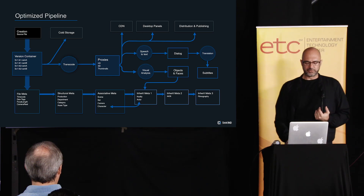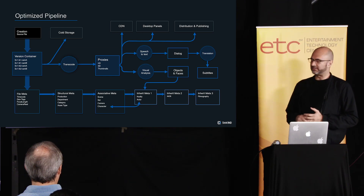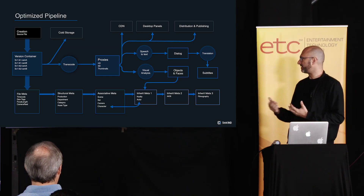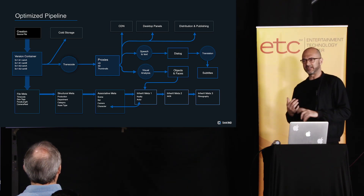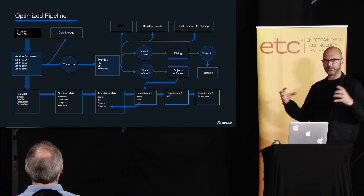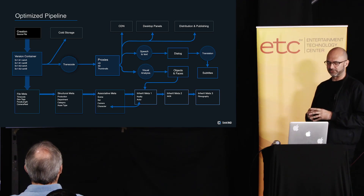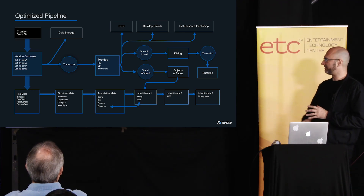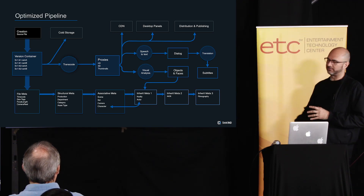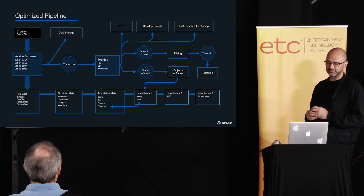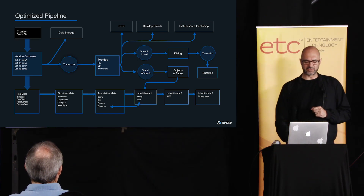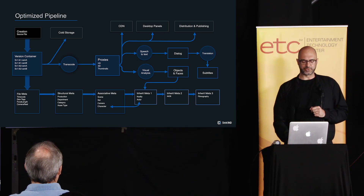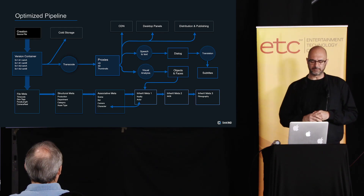We see here all of our different components of metadata — the file metadata being anything that's embedded, structurally how we organize the information, associative meaning any other tags that may live around it, but then we also have these relationships between metadata.